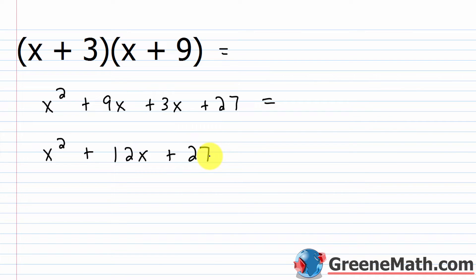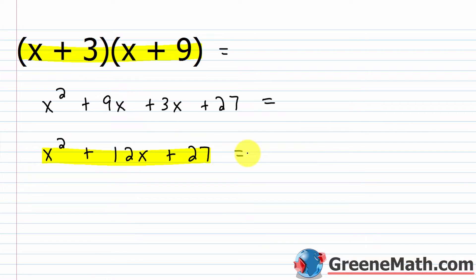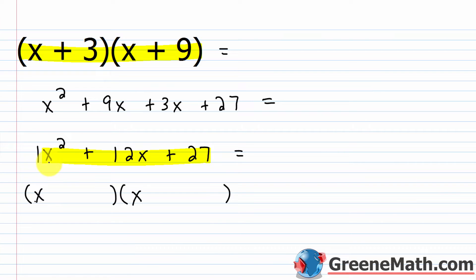The question for today is how to go from the expanded trinomial back to the factored form. Factoring is the reverse of the distributive property, which is what FOIL really is. To reverse this, I set up two sets of parentheses. If the leading coefficient is 1, I know x times x gives me x squared, so this is going to be x and x. The first position of each is very easy to get.